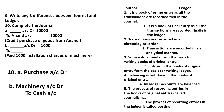Write three differences between journal and ledger. The journal is the book of prime entry — all transactions are recorded for the first time in the journal. The ledger is the book of final entry — transactions are recorded finally in the ledger. In the journal, transactions are recorded in chronological order. Source documents form the basis of writing books of original entry, and entries in the books of original entry form the basis of writing the ledger.